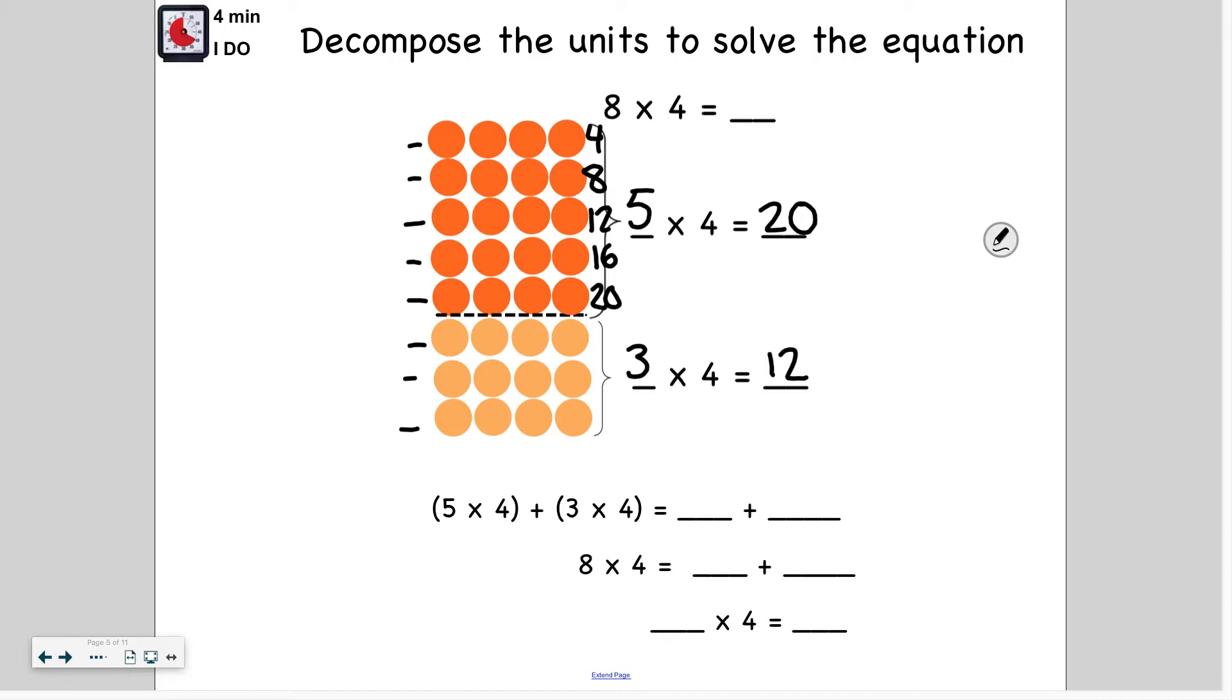So now what I want to do is, obviously if you notice on here, it says five times four plus three times four. So I want to write in my products. So that would be 20 plus 12. So that means that eight times four would be the same thing as adding 20 plus 12. I would get the same answer. So what does 20 plus 12 equal? Let me go ahead and add that using standard algorithm. Zero plus two is two and two plus one is three. So that means that eight times four equals 32. I can fill that up here as my final product.